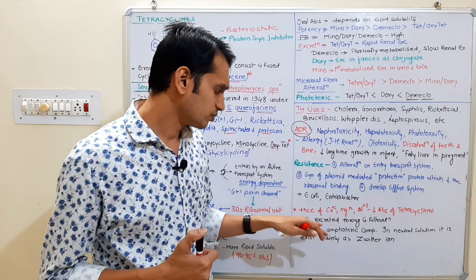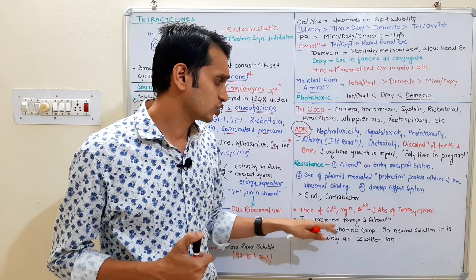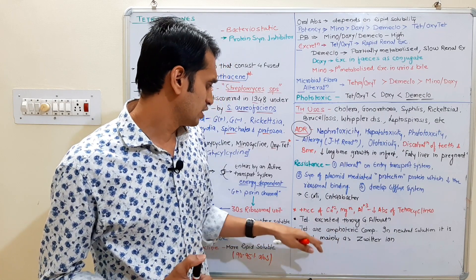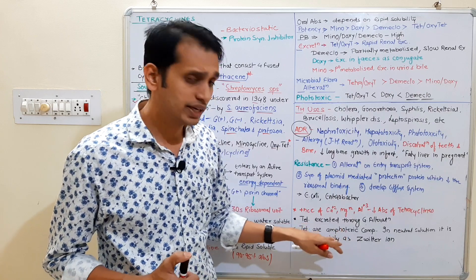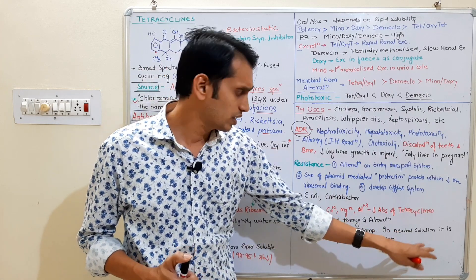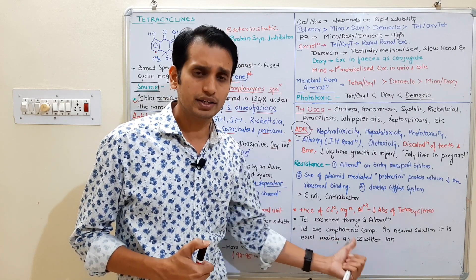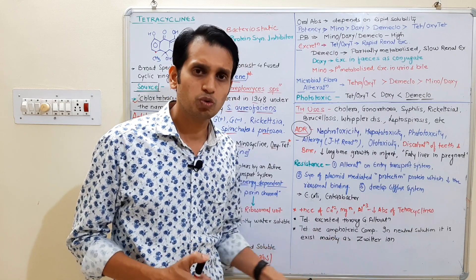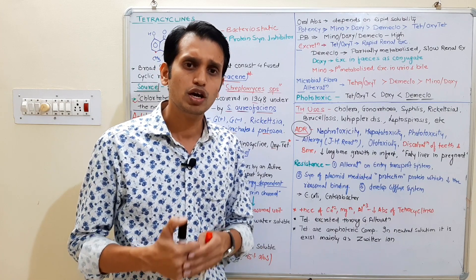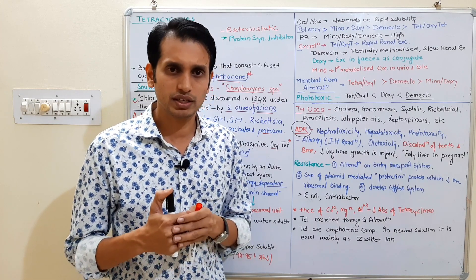These drugs are excreted through glomerular filtration and are amphoteric in nature, meaning in neutral solution they exist mainly as a zwitterion — having both positive and negative charges present simultaneously.